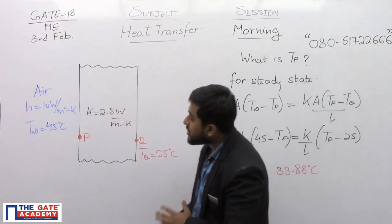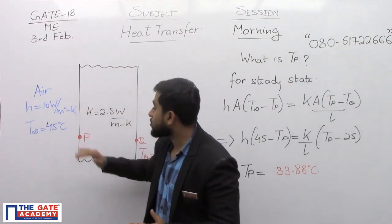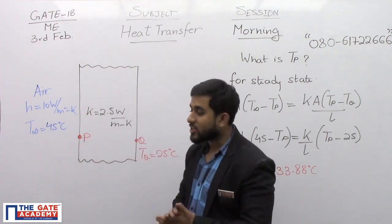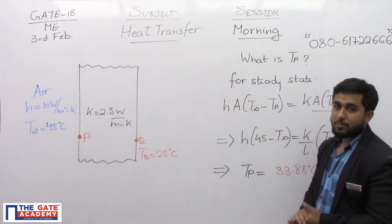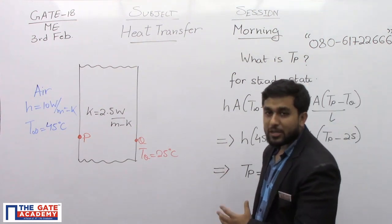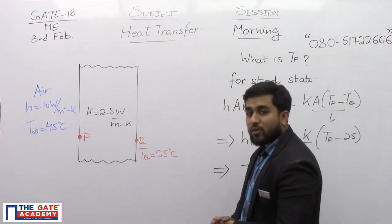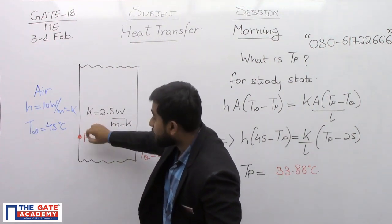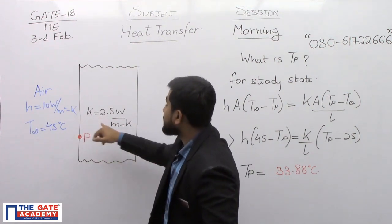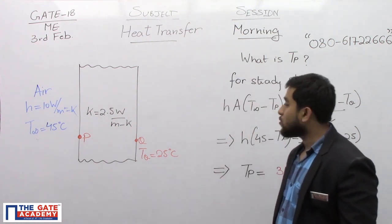What will happen is that initially the heat will enter from the air to the wall at P surface by convection and then it will move inside from P to Q by conduction. But being steady state whatever heat is coming inside is going to Q. So the rate of heat convection at surface P from the air is equal to rate of conduction from P into Q.